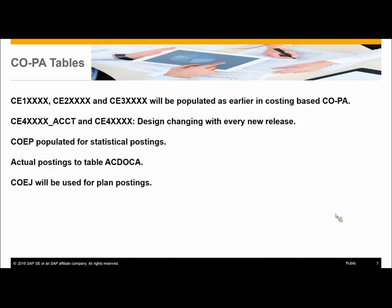The first thing is the tables. Line items are stored in the table ACDOCA. PA segments are stored in CE4XXXXX, where XXXXX is the operating concern. TA segments are also stored in CE4. Based on cost-based, you still have the same tables CE1, CE2, and CE3. COEP is used for statistical postings — not real postings but statistical ones.